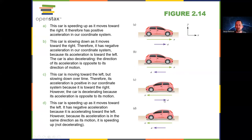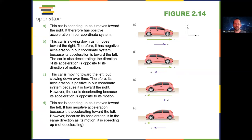No. It's not whether the acceleration is positive or negative that tells you if the car is speeding up or slowing down, but how the velocity and acceleration compare to each other. In example C, the velocity is to the right and acceleration to the left — opposite directions — so that car is slowing down. In example D, both velocity and acceleration are to the left — both in the negative direction — so that car is speeding up.